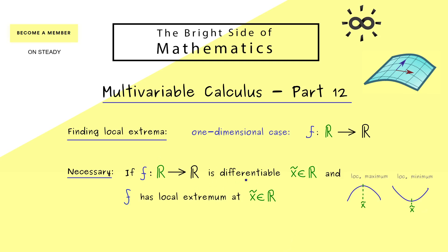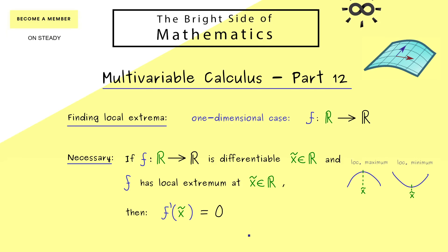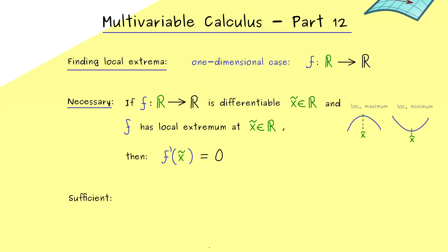For a differentiable function it is necessary that the derivative at this point vanishes — this is what we call the necessary condition for finding local extrema. However, having the derivative equal to zero does not guarantee that we find a local extremum; in other words, it's not a sufficient condition. Such a sufficient condition comes when we include the second derivative.